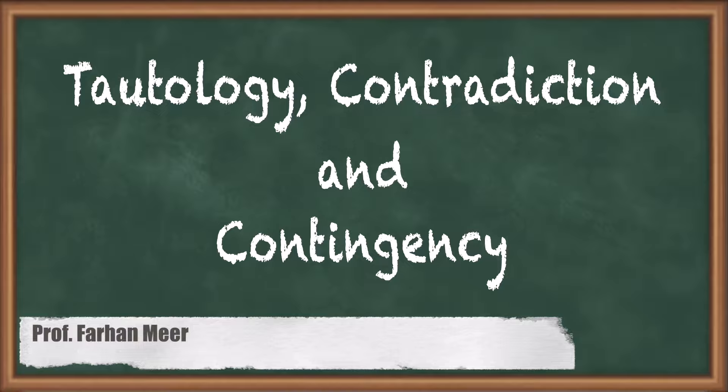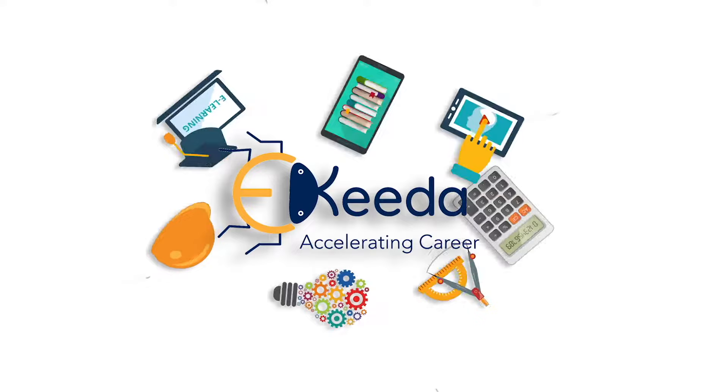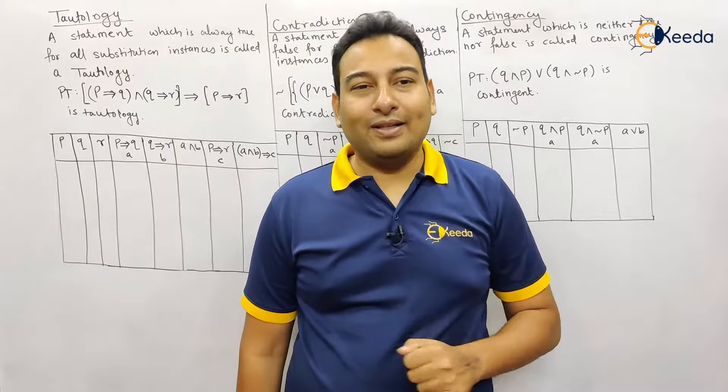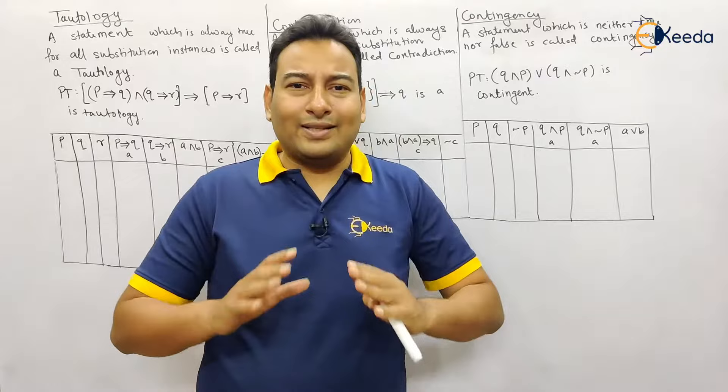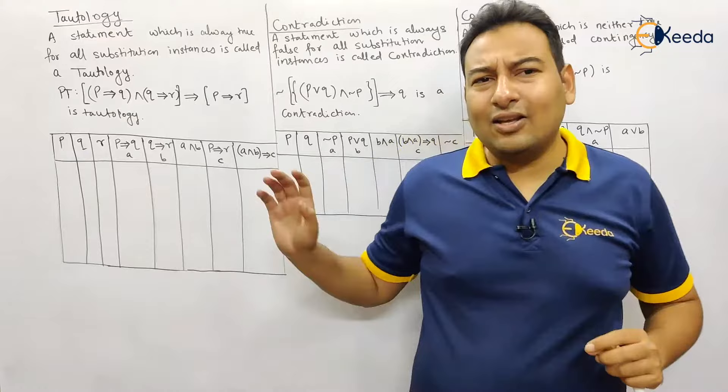Hello friends, in this video we'll talk about tautology, contradiction, and contingency with the help of an example. Let us discuss these concepts — examples are given in front of you. It's a very simple topic. I hope that you are clear with logical equivalence and you know how to make truth tables.